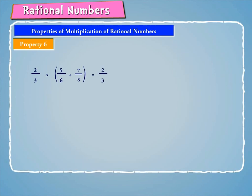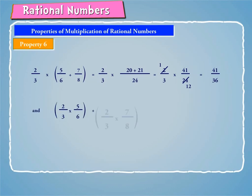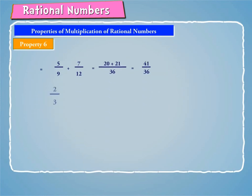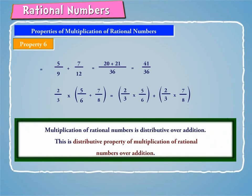Property 6: Let us consider the following examples. 2/3 into (5/6 plus 7/8) is equal to 2/3 into (20 plus 21)/24, which equals 41/36. Also, 2/3 into 5/6 plus 2/3 into 7/8 equals 5/9 plus 7/12, which equals 41/36. Thus, 2/3 into (5/6 plus 7/8) equals 2/3 into 5/6 plus 2/3 into 7/8.